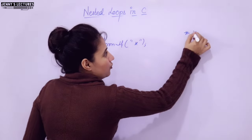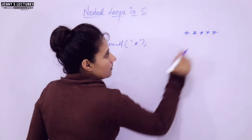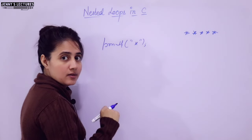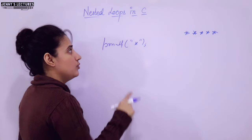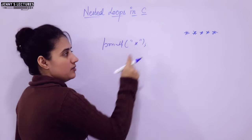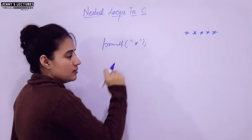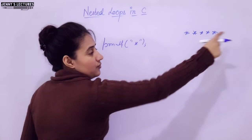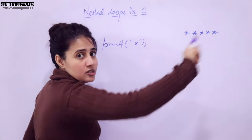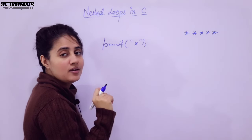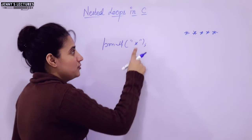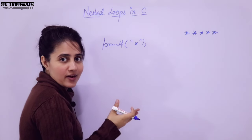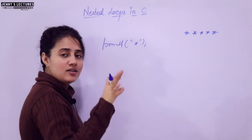Now suppose I say I want to print five stars in this line. Maybe you are smart and in printf you will write five stars — okay, fine, you can print five stars that way. But now suppose I say print 50 stars, 100 stars, 1000 stars in this line. Then it would not be good to write down 1000 stars inside printf. You cannot write that, and if you do, it's not a good practice.